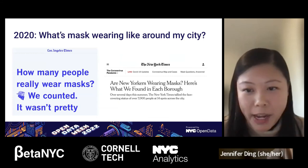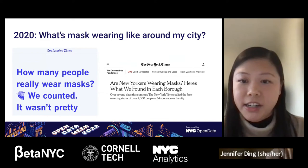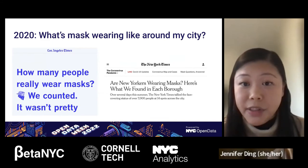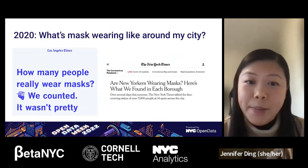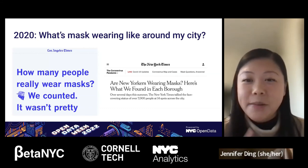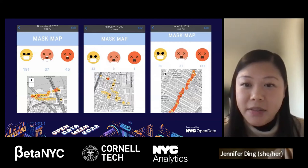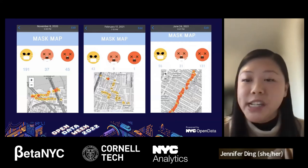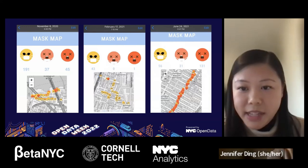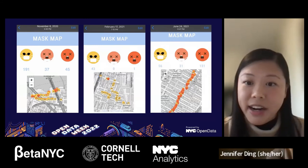In addition to the spatial differences in behavior, mask wearing also seemed to be influenced by temporal factors like day of week or time of day. So to investigate this further, we built Mask Map. The app has three emojis representing three different mask states — masked, half-masked, and no mask. When you observe a behavior, you click on the respective emoji, which logs a count and places that emoji on the map.